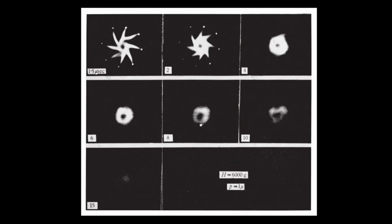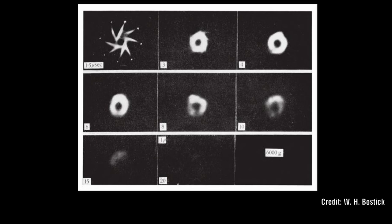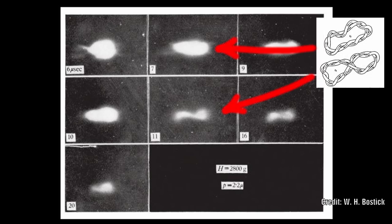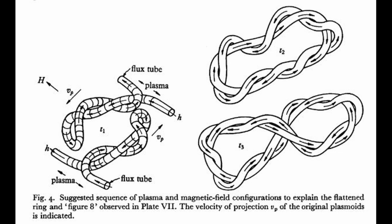He also saw that when combining plasmoids, if he combined less of them to form the torus shape, that the total angular momentum of the shape would be less because obviously there would be less plasmoids. And what would happen in this case is that the torus would be partially inverted, creating a figure of eight shape.